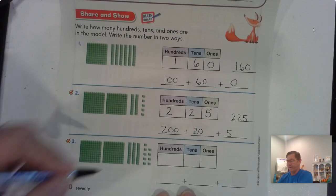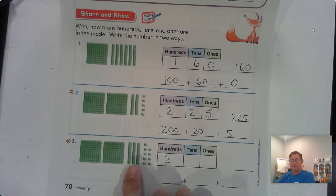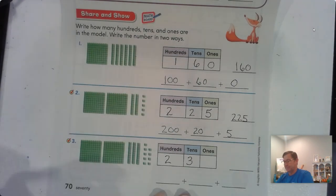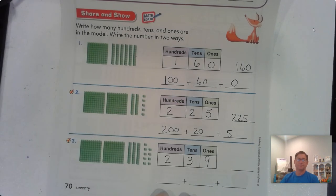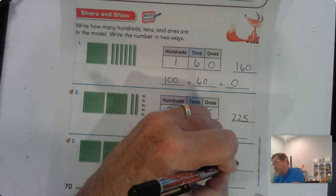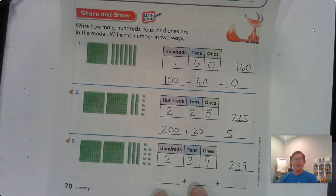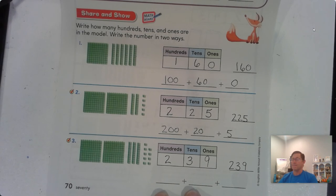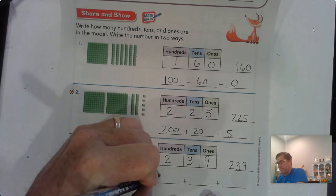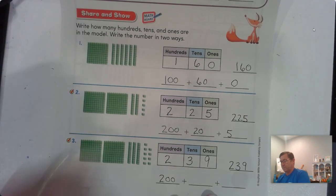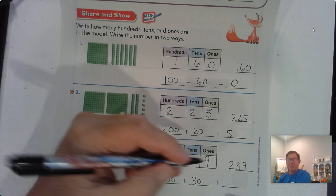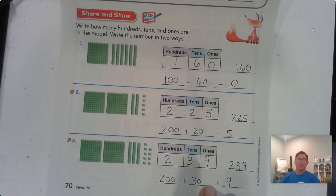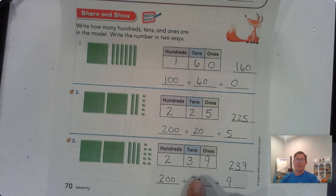All right. Number 3. Again, we have 2 hundreds. This time we have 3 tens, and we have 9 ones. So 239. How do we write that by place value? 2 hundreds is 200, 3 tens is 30, 9 ones is 9. So the sum of the place value is 239.